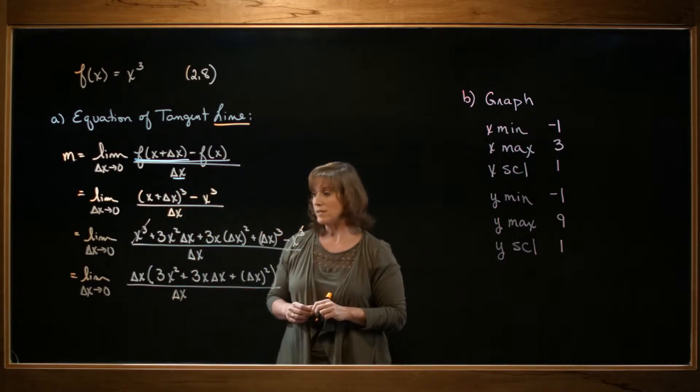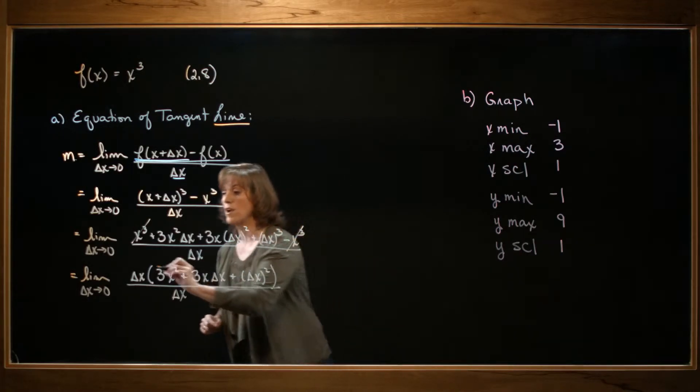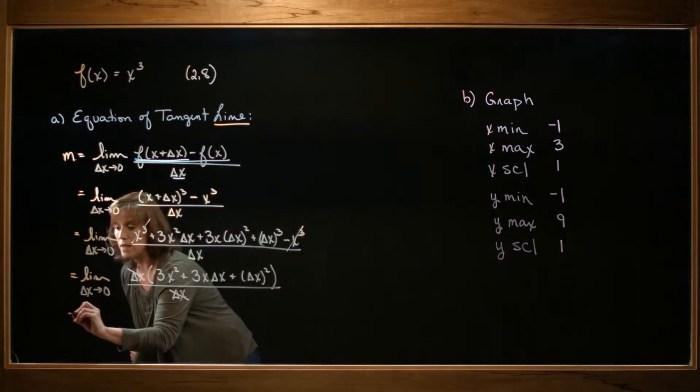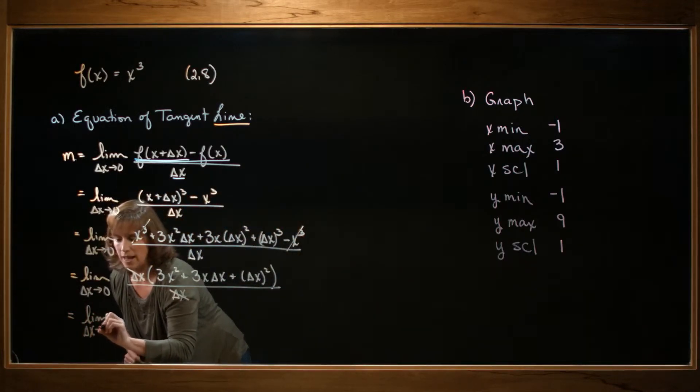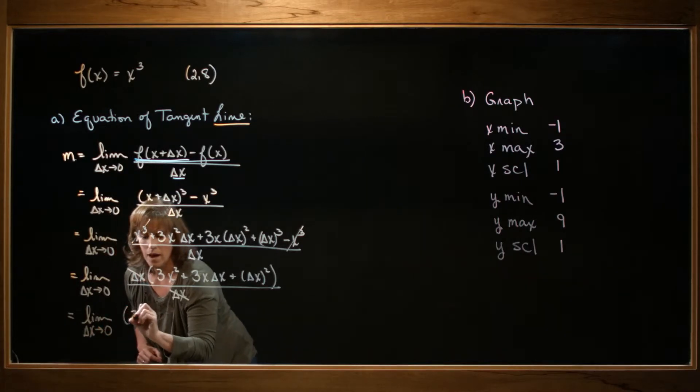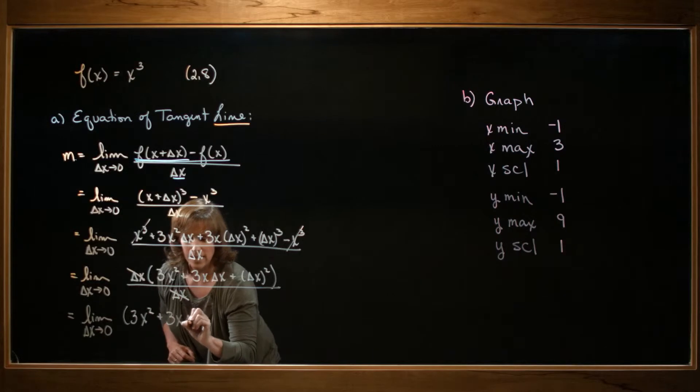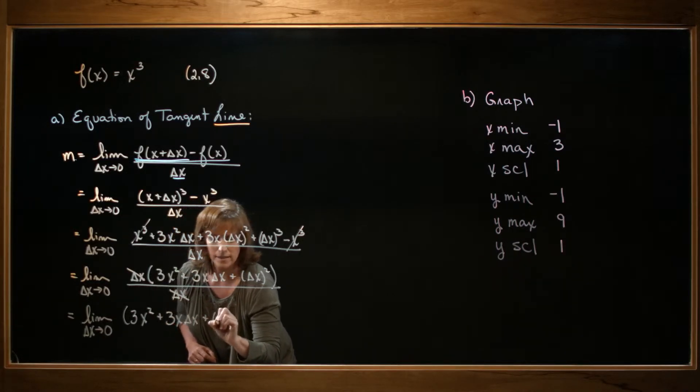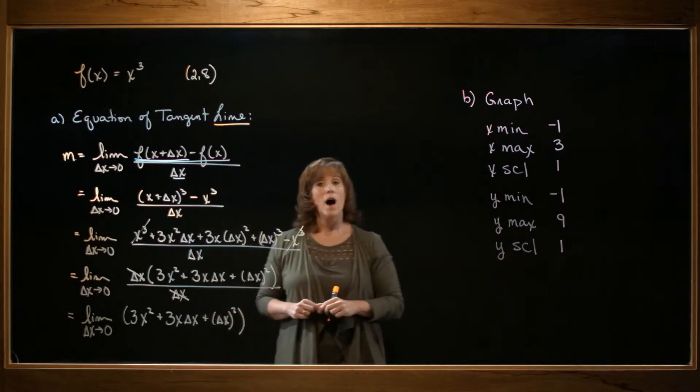Now I notice that delta x is a factor of both the numerator and the denominator, so I can cancel them. Which leaves me with the limit delta x approaches zero of 3x squared plus 3x delta x plus delta x squared.